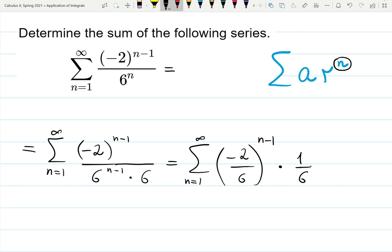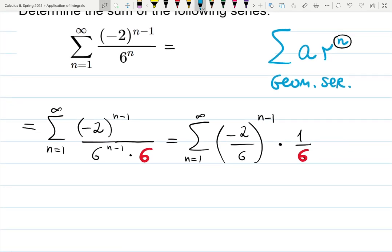Now it's exactly the form of the geometric series. The common ratio r is everything inside of those parentheses. That's my r.